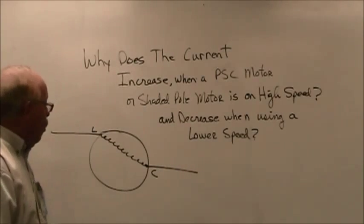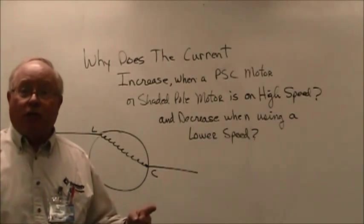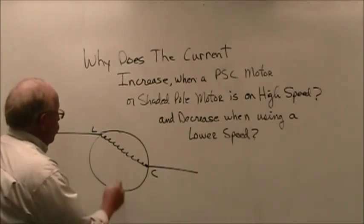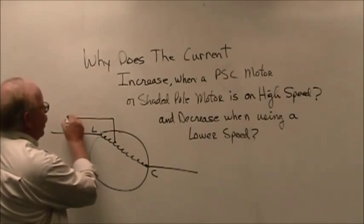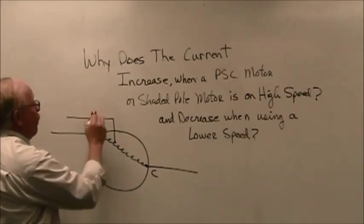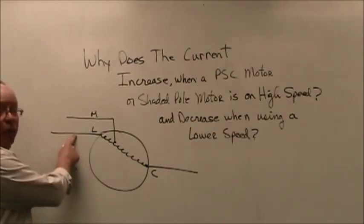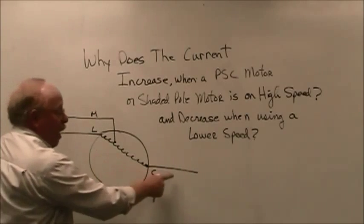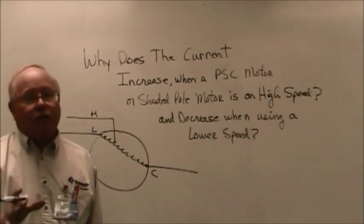...then the motor will have a specific amp draw that will relate to the amount of resistance and the amount of voltage that's being applied to it. But what if we took the winding and we shortened it up? And let's say we put a tap in here. We'll call that M. And now when we supply power to it, instead of supplying power to L and go out C, now we'll supply power to M and we'll go out C.